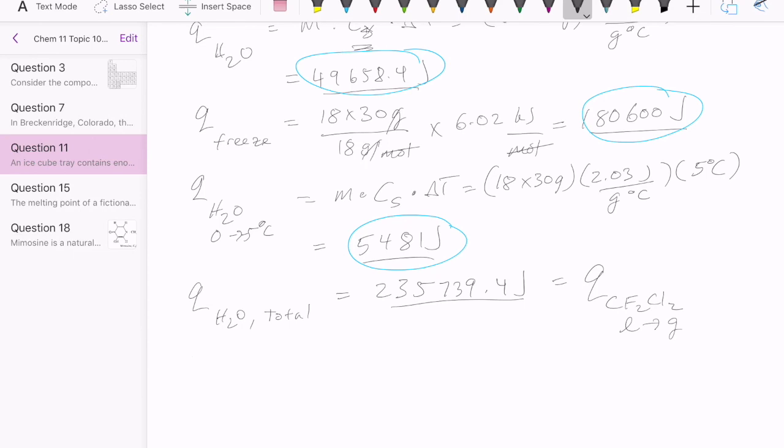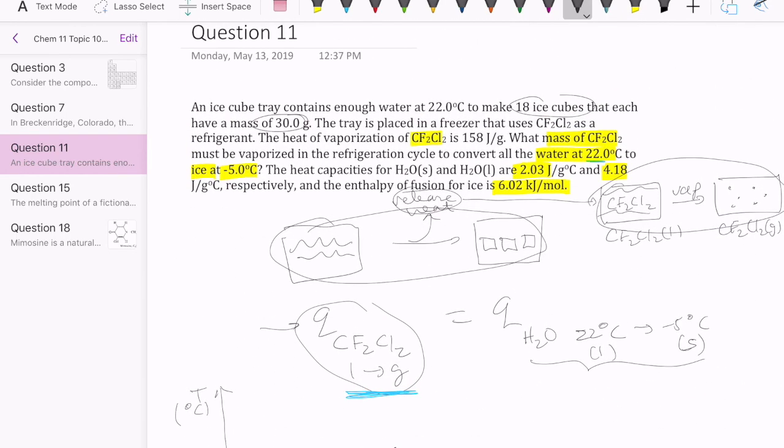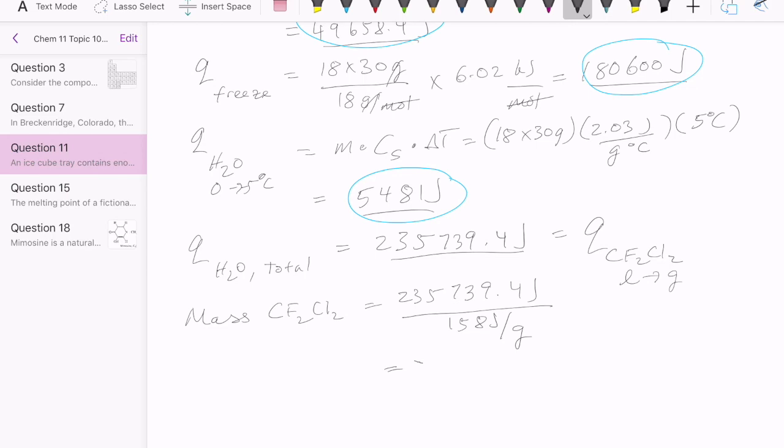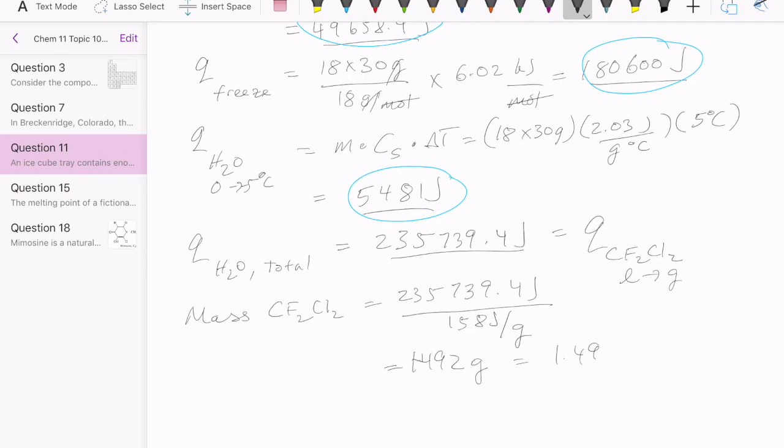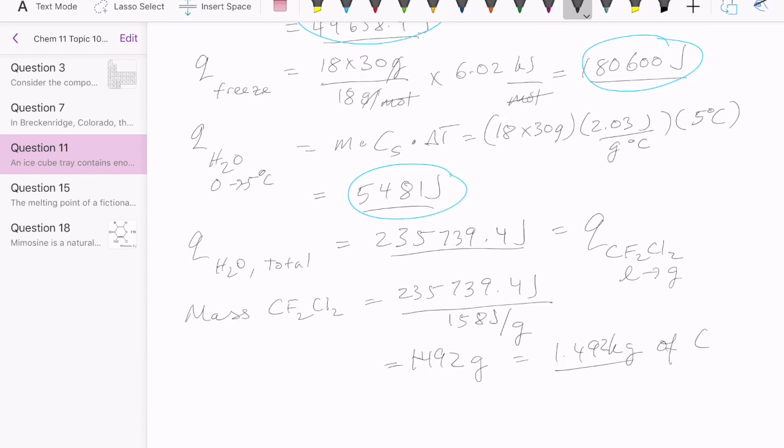The question is, how much Freon am I going to need? So to get the mass of the CF2Cl2, all I need to do is take the energy I need, which is this number, and then divide by the amount of energy needed to evaporate a gram of CF2Cl2, which we were told is 158 joules. And so my answer at the end would be 1492 grams, or we convert this to kilogram, will be 1.492 kilograms of CF2Cl2.